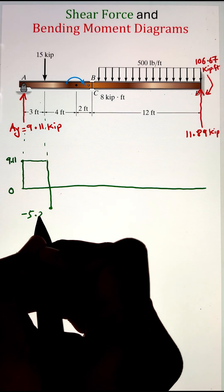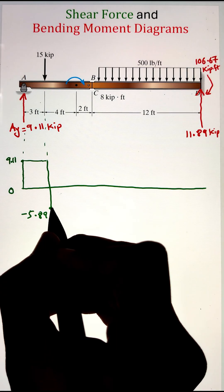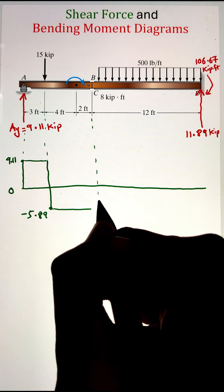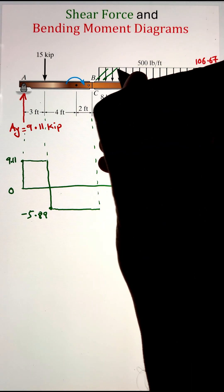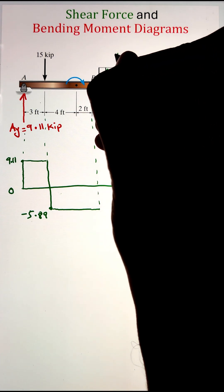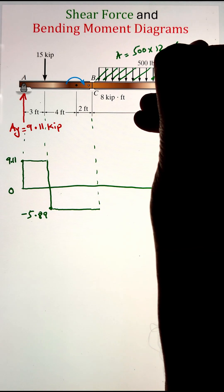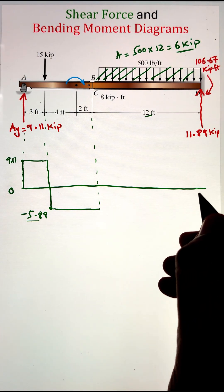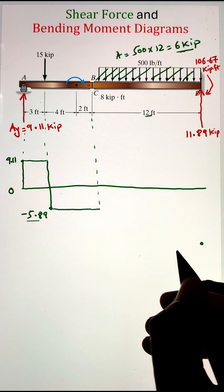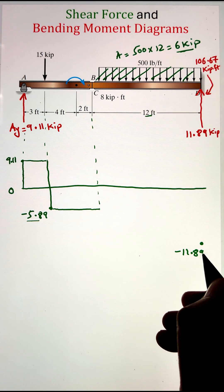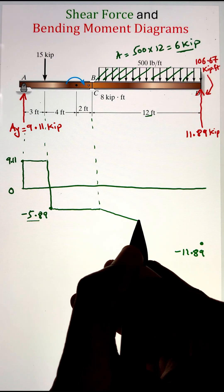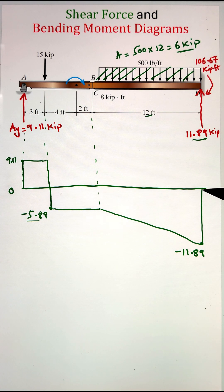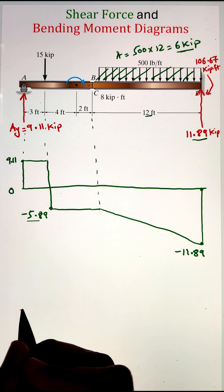The distributed loading of 500 pounds per foot extends over 12 feet on the beam. Calculating the area under that load gives 6 kilopounds, meaning the shear force diagram goes down a further 6 kilopounds as it reaches point D. Subtracting 6 from negative 5.89 gives negative 11.89 at point D. Since the slope of the distributed loading is zero, the profile from C to D is linear. Finally, the 11.89 kilopound upward reaction at D causes a jump back up to zero.